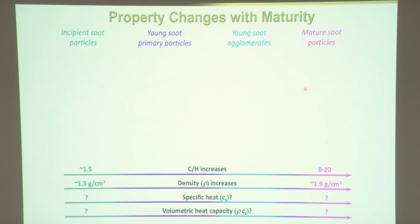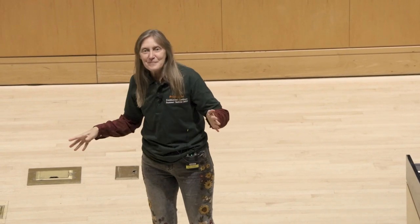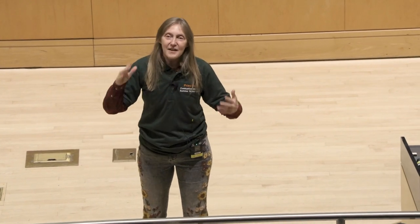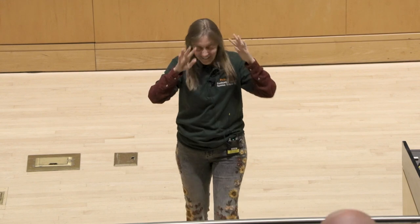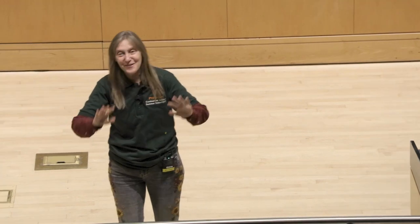As maturity increases, properties all change: increasing carbon-to-hydrogen ratio, increasing density because the interlayer spacing gets smaller, and specific heat and volumetric heat capacity also change — though we don't know all the details. Now I'll tell you about a project with a little story behind it. About five years ago I was diagnosed with breast cancer and had to go on medical leave for chemo. My boss said absolutely no work — it would be illegal. My oncologist warned me about 'chemo brain' — making you fuzzy and unable to think, potentially for the rest of your life. That threw me into a panic. She said do crossword puzzles; I decided to just sit and read papers on something new.